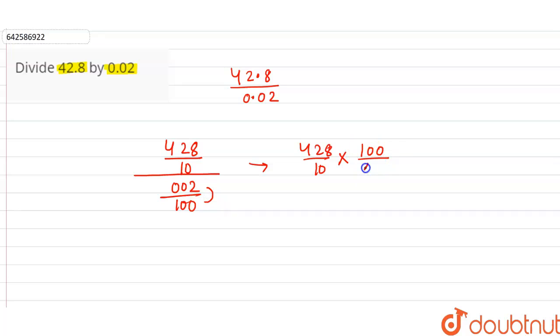It will be equal to 428 over 10 times 100 over 2. 0.02 can be written as 2, as 0 has no value before a whole number. So it can be written as 2.